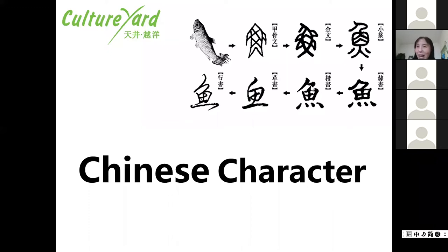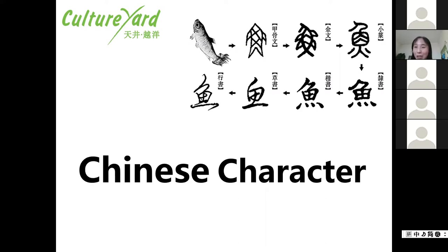Some of you have already learned something about Chinese characters. Here is a character - who knows this character? It means fish. So here we can see that originally it was a picture, and step by step in different periods it has changed. Currently we write it like this.